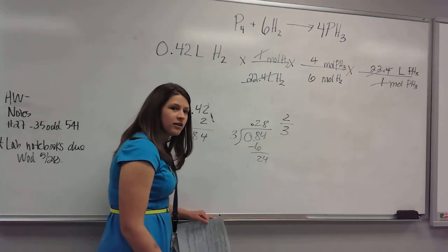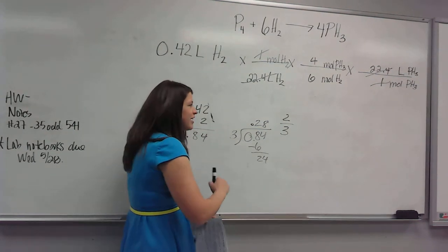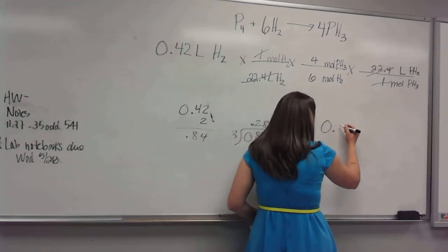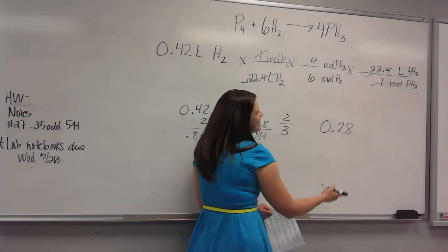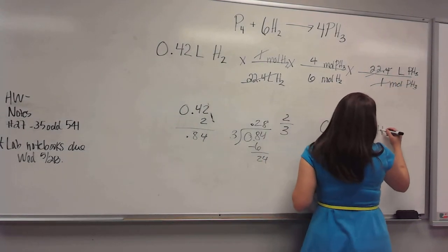0.28. Does anyone beat me on your calculators? Yeah. Oh, you should have called out the answer. 0.28 liters of PH3.